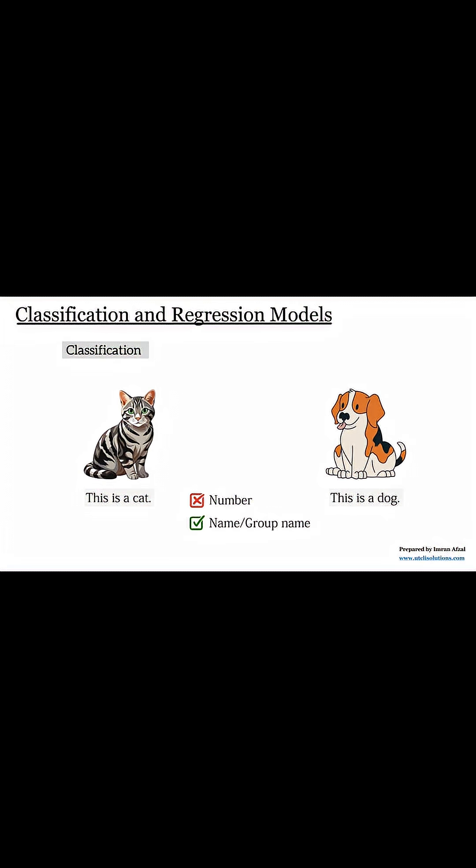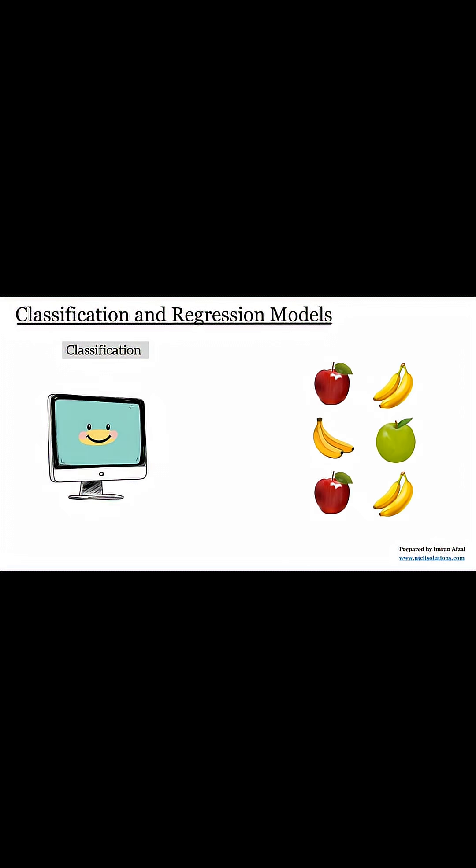The computer learns by looking at many examples. For example, if you show the computer many pictures of apples and bananas, it will slowly learn how apples look and how bananas look. Then when you give it a new picture, it will try to guess, is this an apple or a banana?